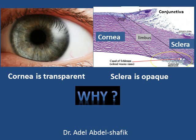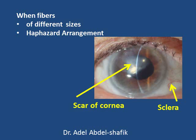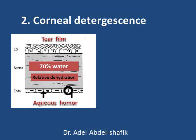The cornea is transparent while the sclera is opaque. The cornea is transparent because it is formed of fibers of uniform size running parallel to the surface, and the fibers in one lamina are perpendicular to the fibers in the next lamina. If this special arrangement is lost — as in the case of a haphazard arrangement of fibers — then we get an opaque surface like the sclera. If it occurs in the cornea, we get an opacity in the cornea.